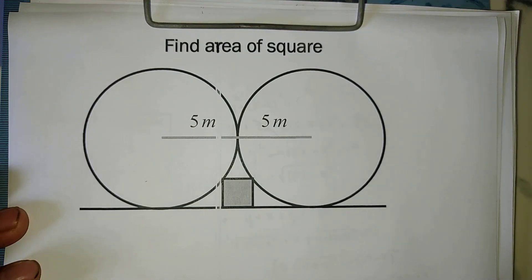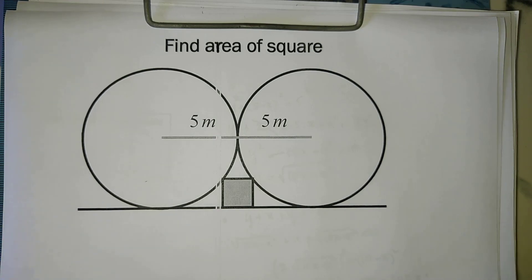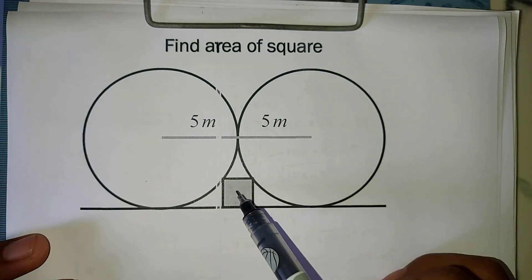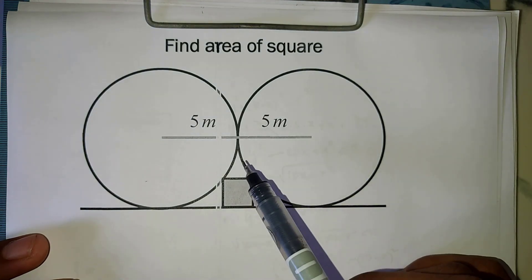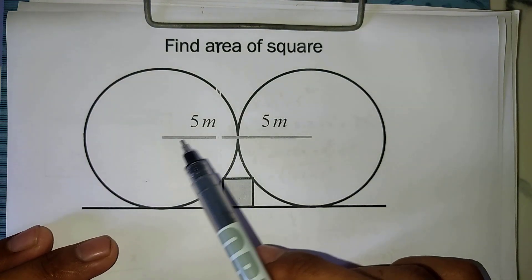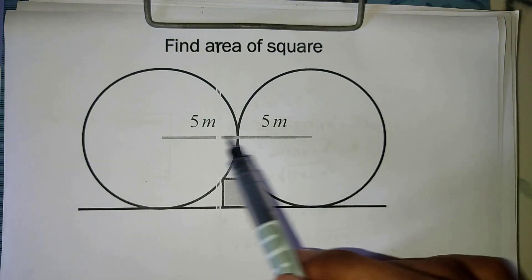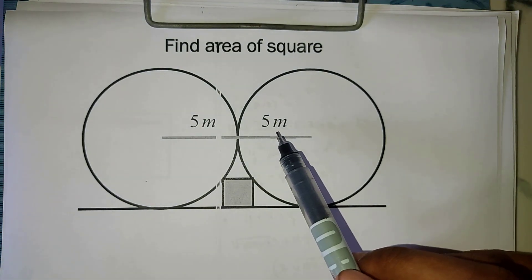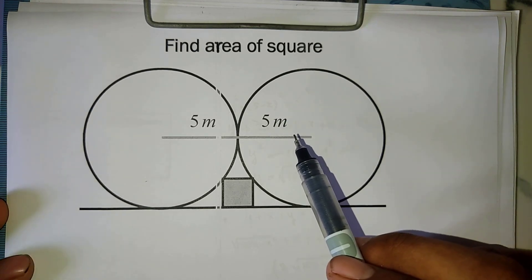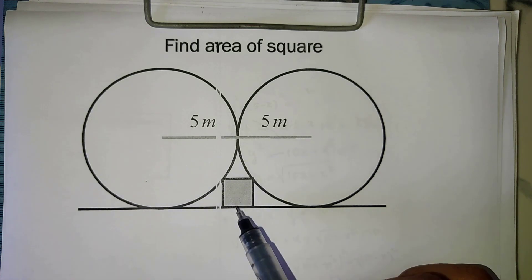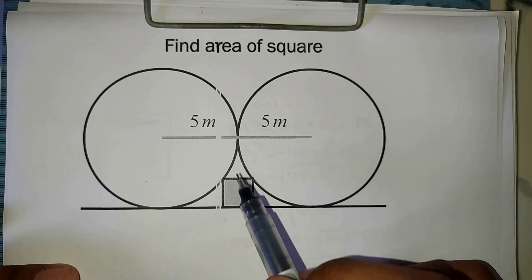Hello everyone, welcome to my YouTube channel. In this video we are showing you how to find the area of a square. Here is the square that we have to work with — the side length is twice a given value.